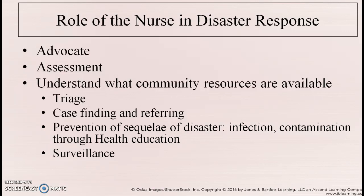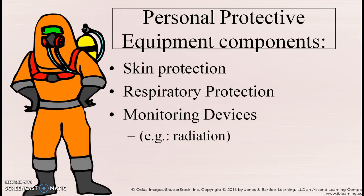Surveillance is also important — active surveillance watching for cases of people sick with communicable diseases. Personal protective equipment becomes critical in a bioterrorism event. Skin protection is important in chemical or explosive events. Respiratory protection is needed for chemical events, and monitoring devices become important in radiologic or nuclear events.